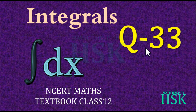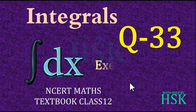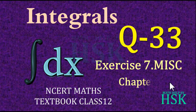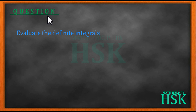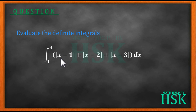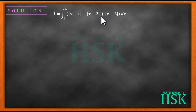Hello friends. In this video I am going to take question number 33 of the miscellaneous exercise of chapter 7 of NCERT maths textbook class 12. In this question we have to evaluate the definite integral of modulus of x minus 1 plus modulus of x minus 2 plus modulus of x minus 3, dx, from the limit 1 to 4. Let us see how we are going to solve this question.